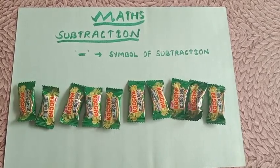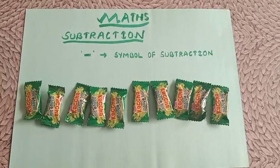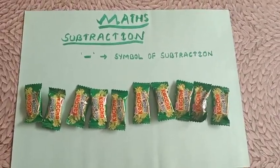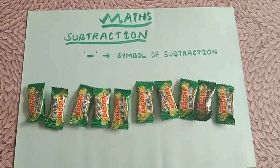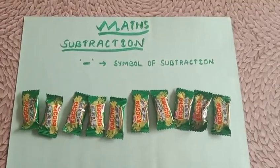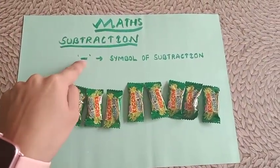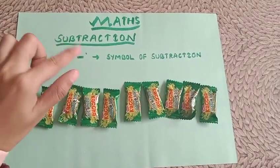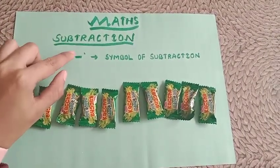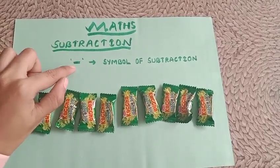As you can see, there are toffees on my table on the sheet. We will take these toffees to understand subtraction. As I have mentioned, this is the symbol of subtraction. Anywhere if you see this symbol, you have to subtract the materials, the things, the objects.